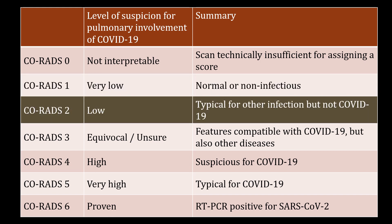CORADS-2 implies a low level of suspicion for pulmonary involvement by COVID-19 based on CT findings in the lungs that are typical of infectious etiology but not compatible with COVID-19. Examples are bronchitis, infectious bronchiolitis, bronchopneumonia, lobar pneumonia, and pulmonary abscess. Features include tree-in-bud sign, centrilobular nodular pattern, lobar or segmental consolidation, and lung cavitation.